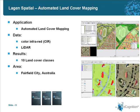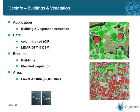There's also an automated land cover mapping application used by Lagian Spatial in Australia — a land cover mapping project similar to the InfoTerra project, using color infrared data and LIDAR. It produces 10 land cover classes for the area of Fairfield City in Australia. Again, it uses a combination of eCognition Developer, Server, and Architect.